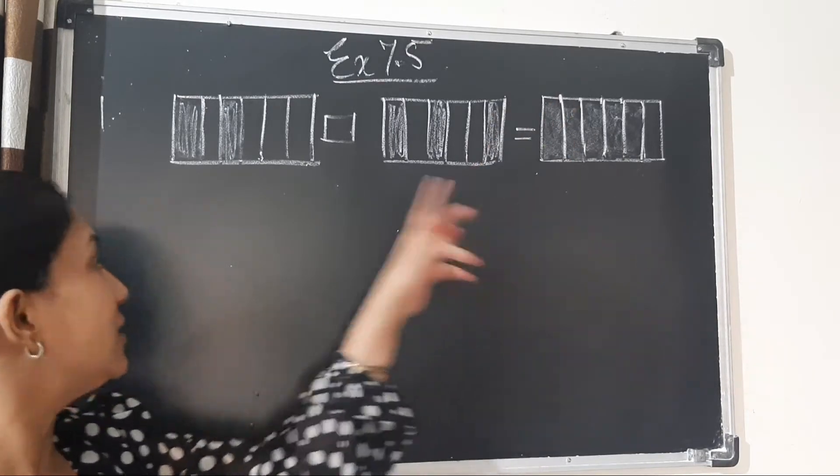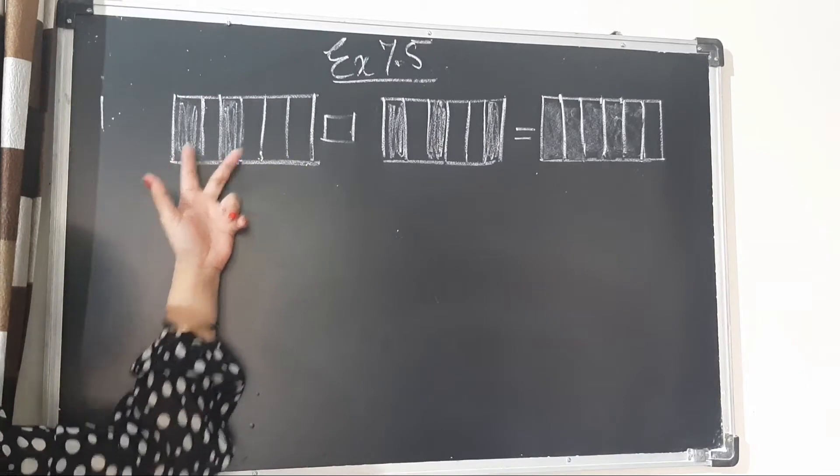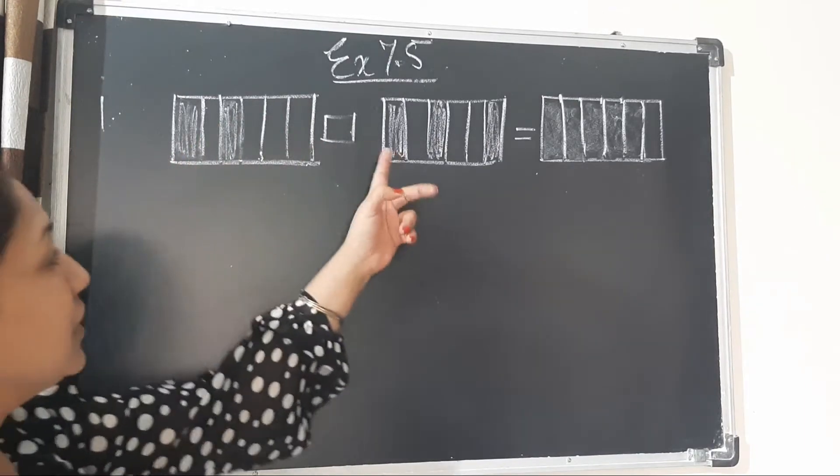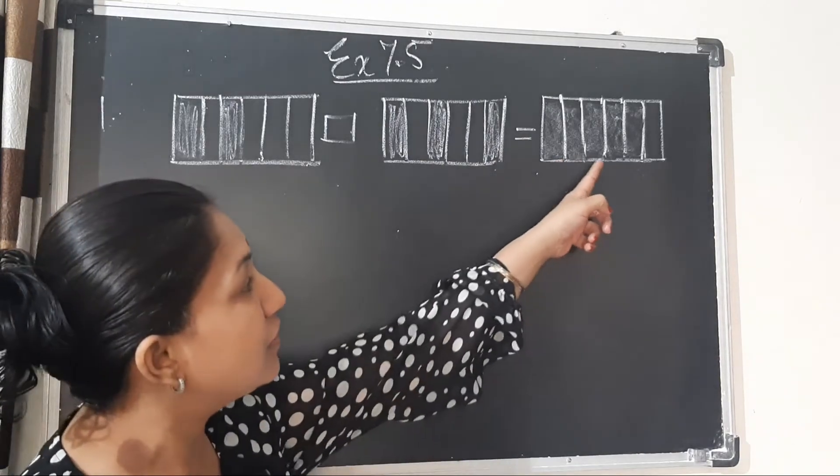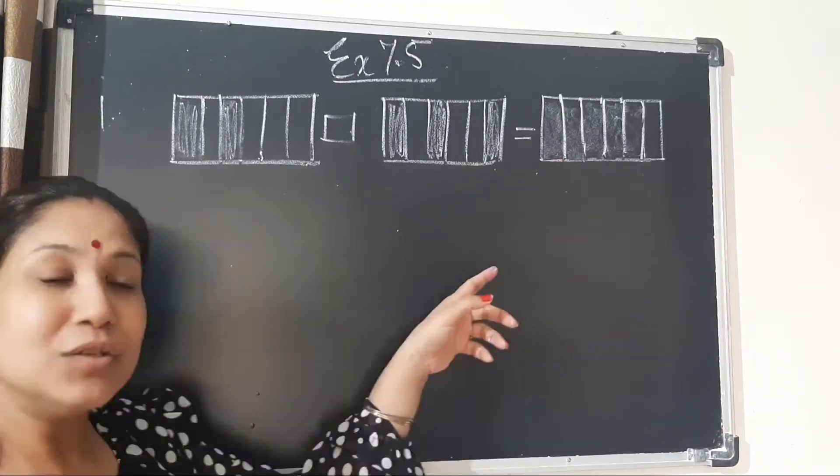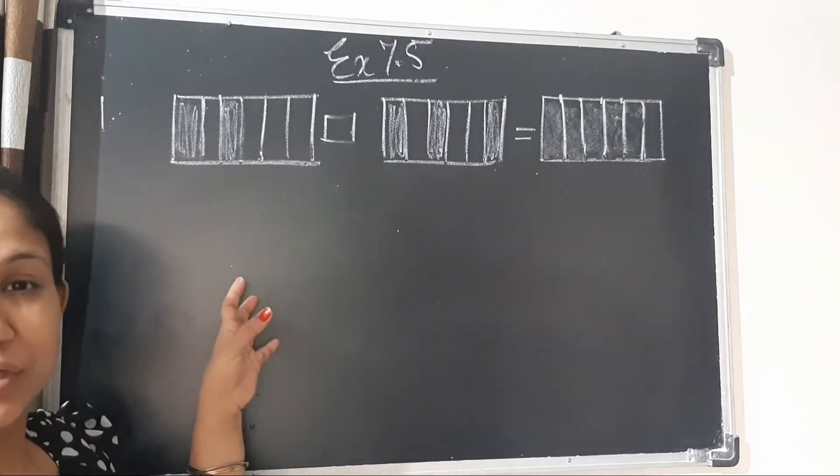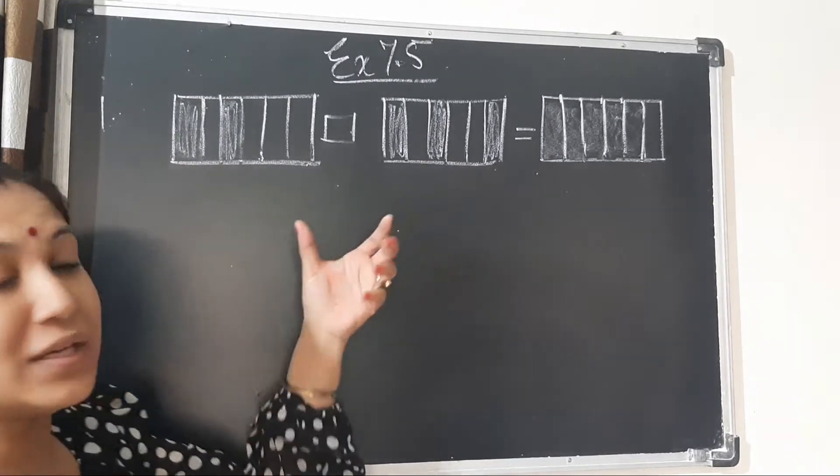The difference is here I have shaded 2 portions out of 6. Here you can see 3 out of 6 are shaded and here 5 are shaded out of 6. So just look at this question and observe what is happening.